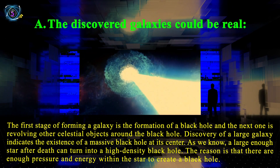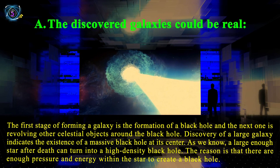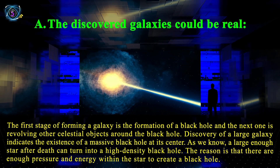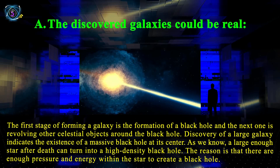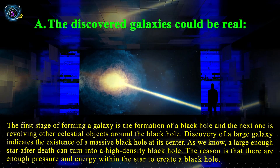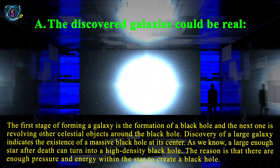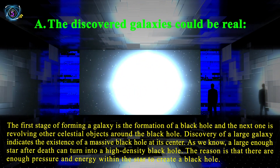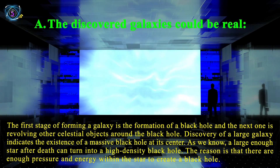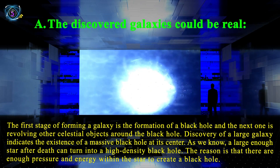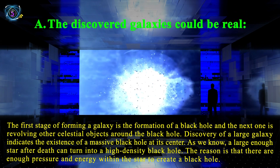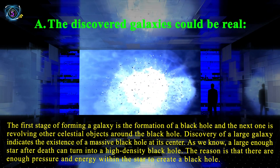The first stage of forming a galaxy is the formation of a black hole, and the next is revolving other celestial objects around a black hole. The discovery of a large galaxy indicates the existence of a massive black hole at its center. A large enough star can turn into a high-density black hole, because there is enough pressure and energy within the star to create one.